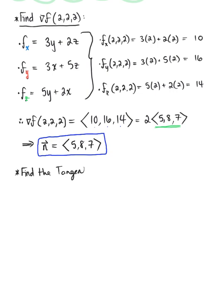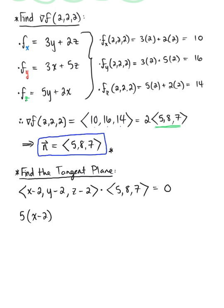To find the tangent plane, we take the dot product of the position vector with our normal vector. We have ⟨x-2, y-2, z-2⟩, our position vector at point P₀, dotted with the normal vector ⟨5,8,7⟩ equals 0. By the dot product, this gives us 5(x-2) + 8(y-2) + 7(z-2) = 0. Of course, we need to simplify.